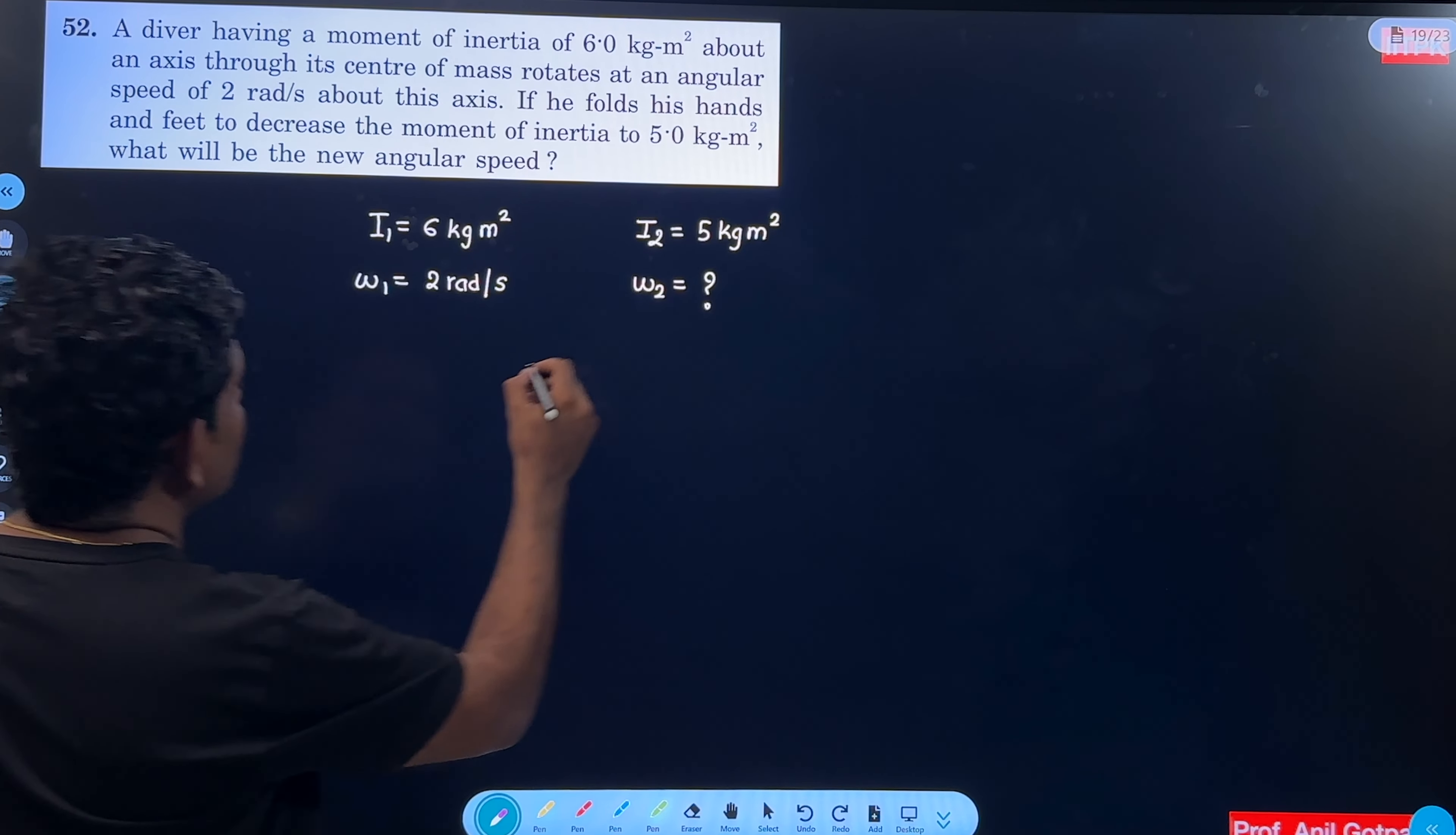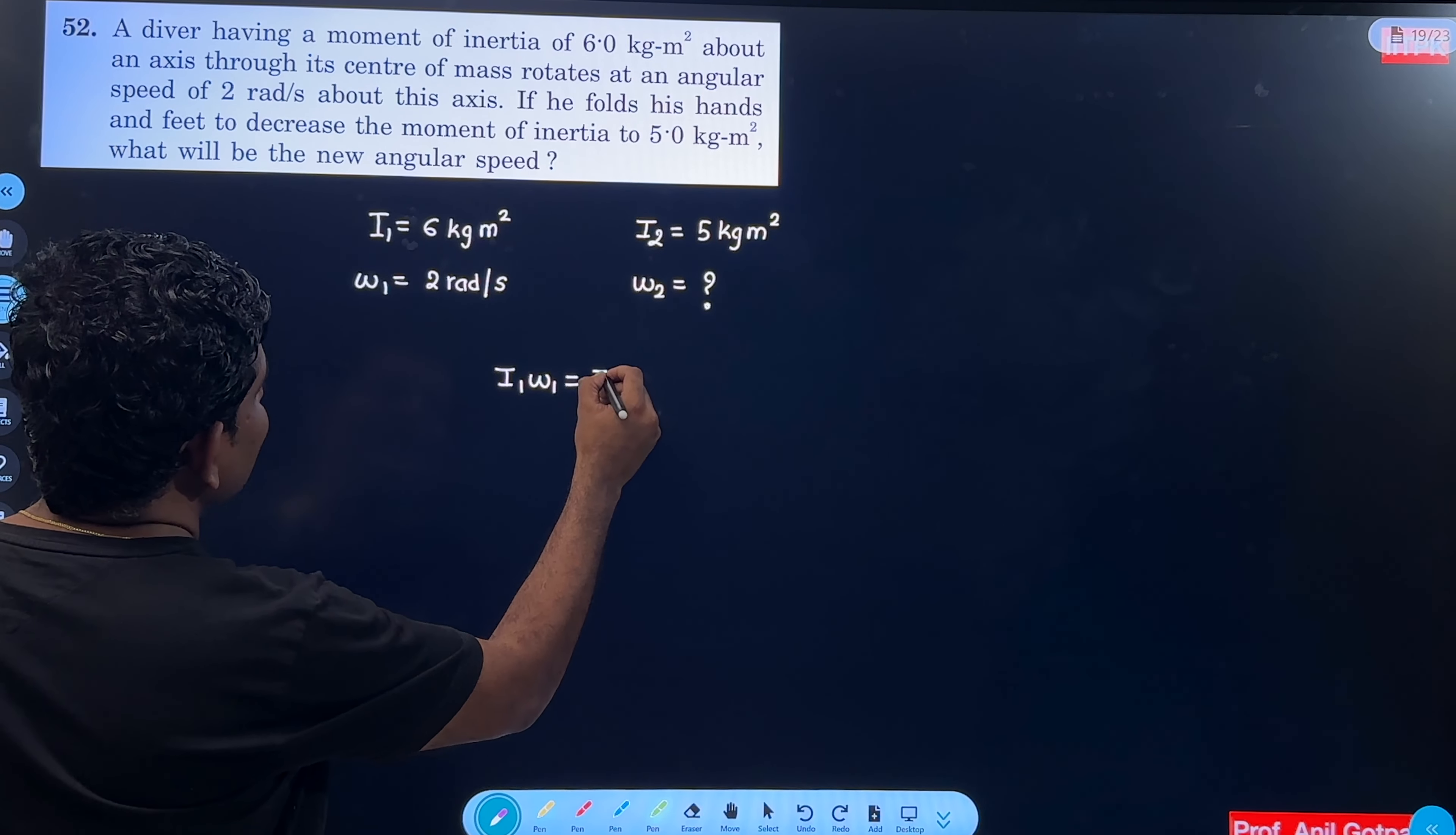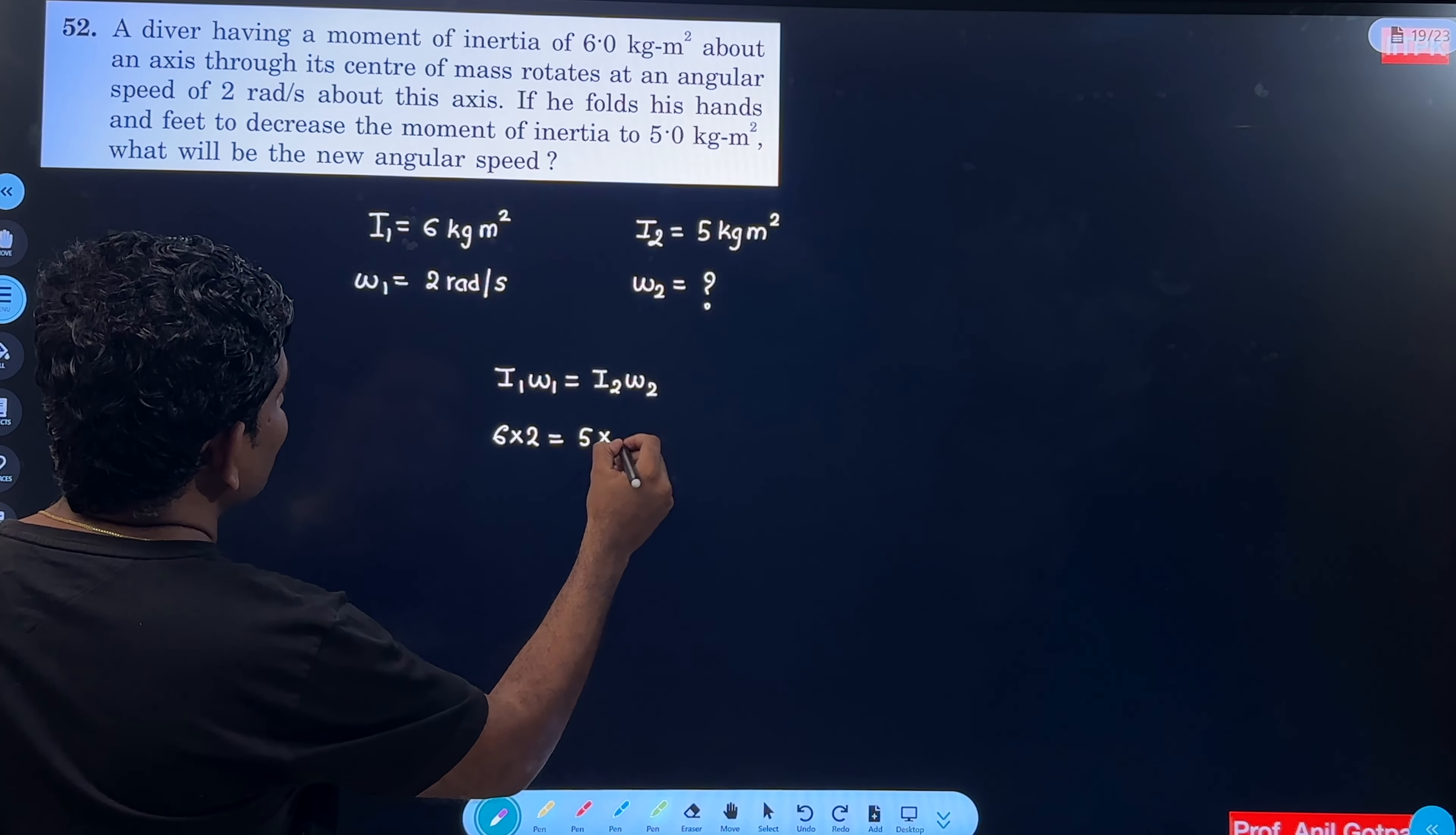So again external torque acting is 0. So law of conservation of angular momentum. I1 omega 1 should be equal to I2 omega 2. So 6 into 2 should be equal to 5 into omega 2.